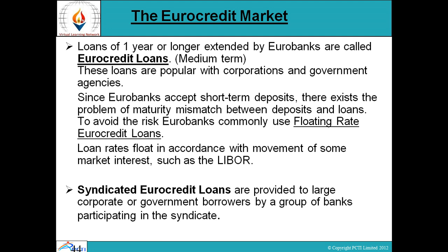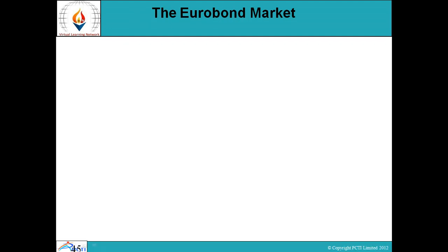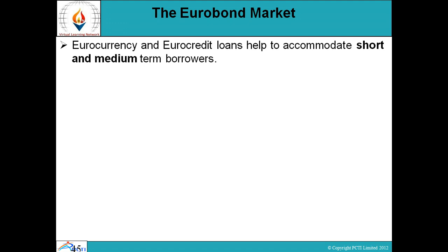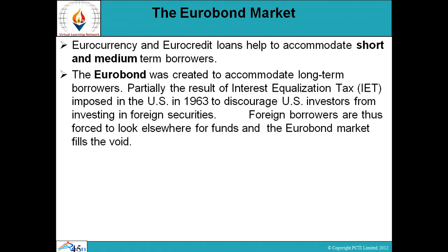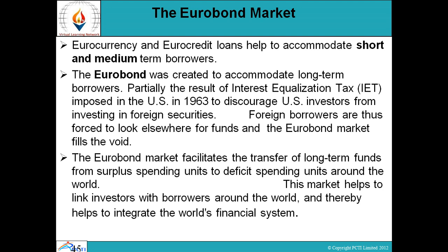Since euro banks accept short-term deposits, there exists the problem of maturity mismatch between deposits and loans. To avoid this risk, euro banks commonly use floating rate euro credit loans — loan rates float in accordance with the movement of some market interest rate such as LIBOR. Syndicated euro credit loans are provided to large corporate or government borrowers by a group of banks participating in the syndicate. Euro currency and euro credit loans help accommodate short and medium-term borrowers. The euro bond was created to accommodate long-term borrowers, partly as a result of the interest equalization tax imposed in the US in 1963. The euro bond market facilitated the transfer of long-term funds from surplus to deficit spending units around the world, helping to integrate the world's financial system.